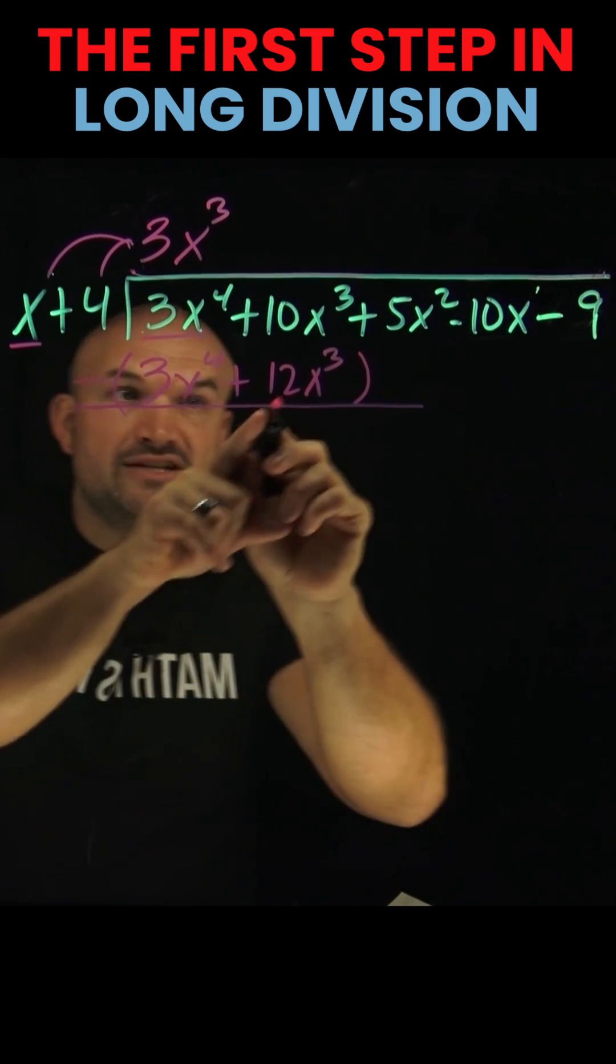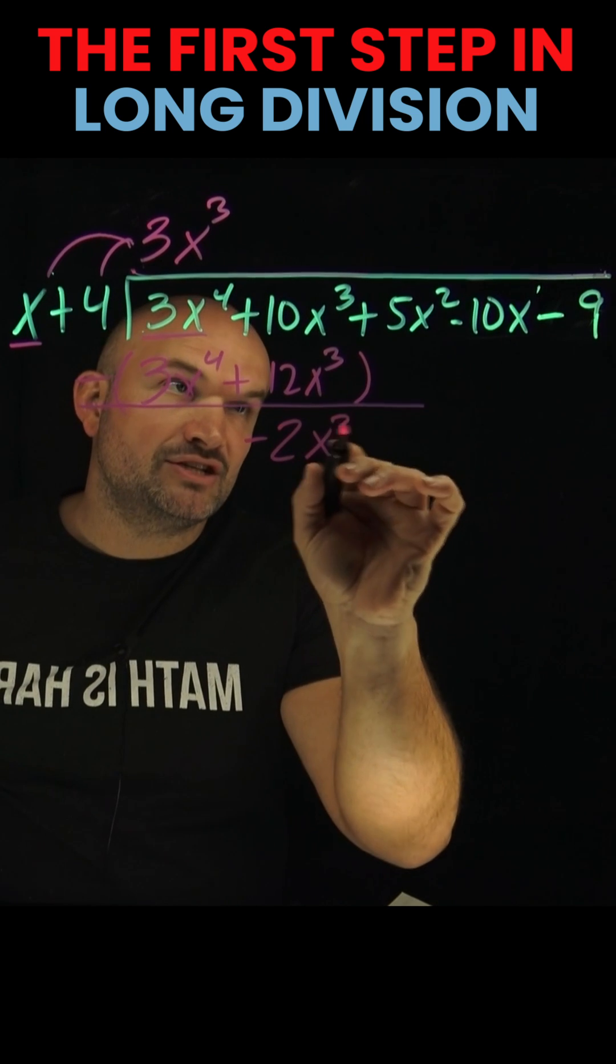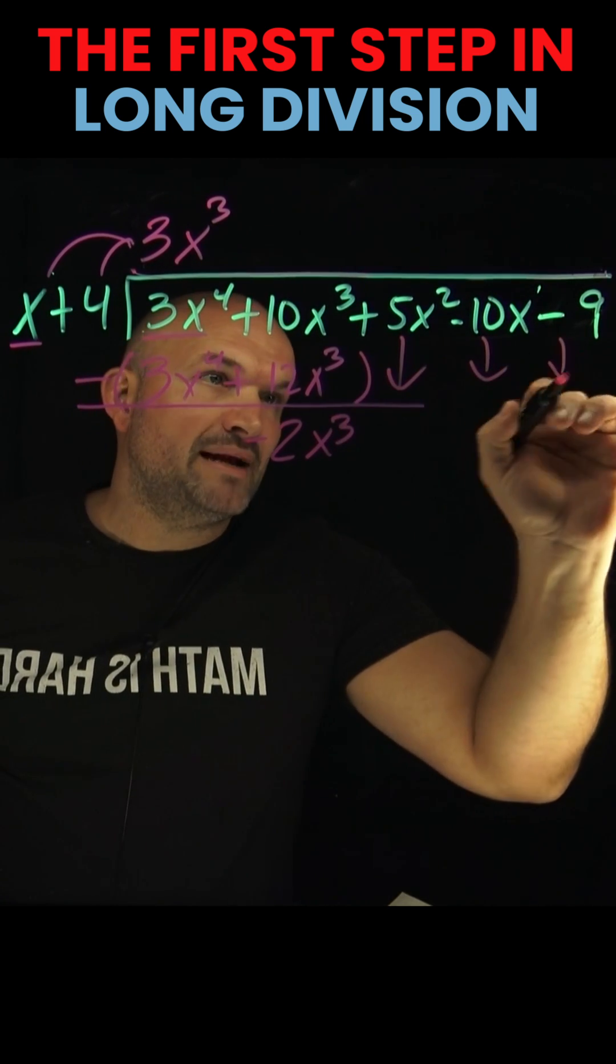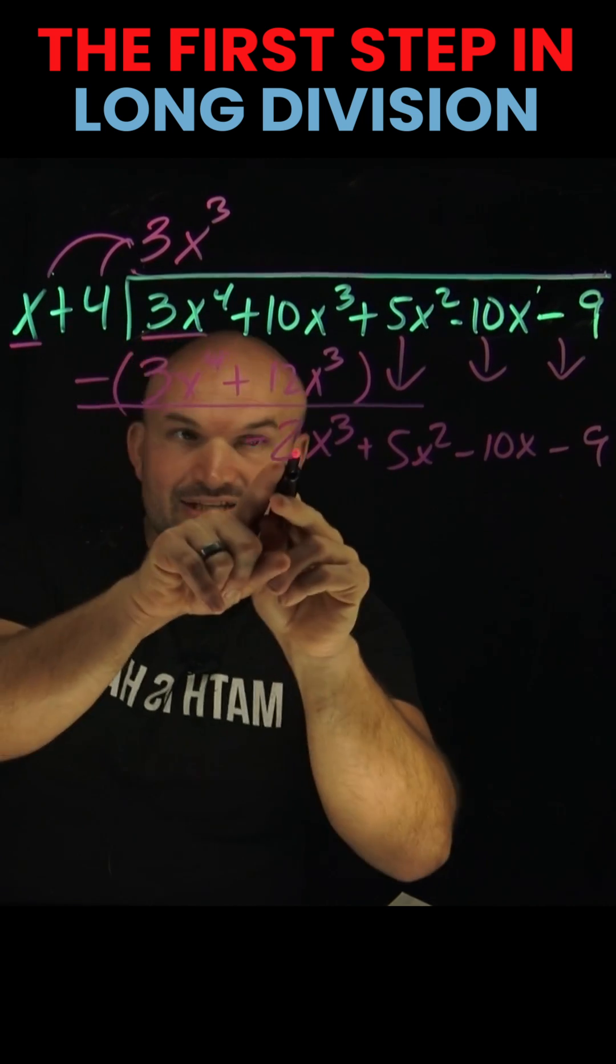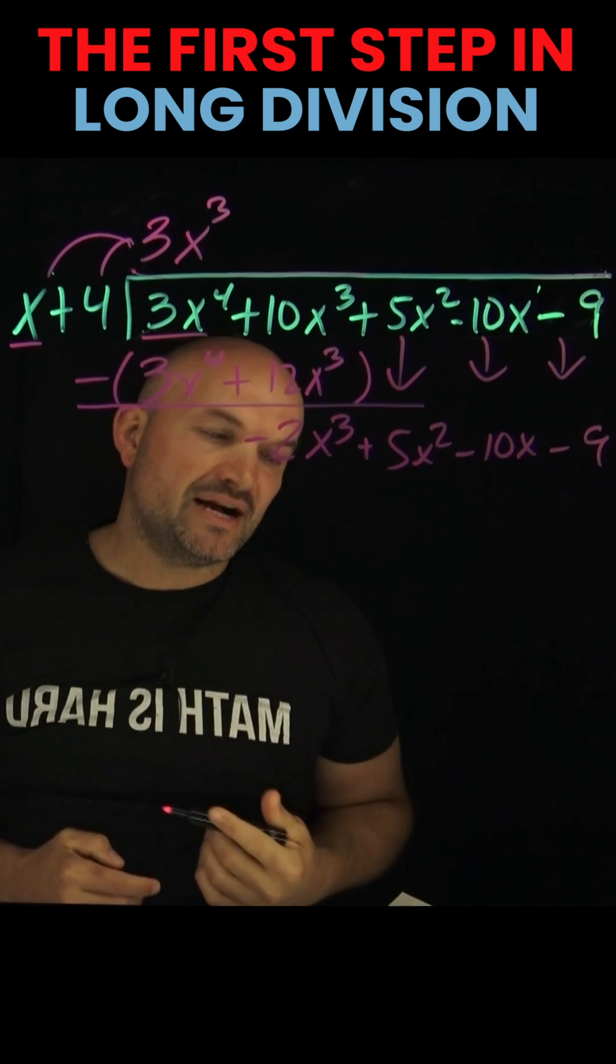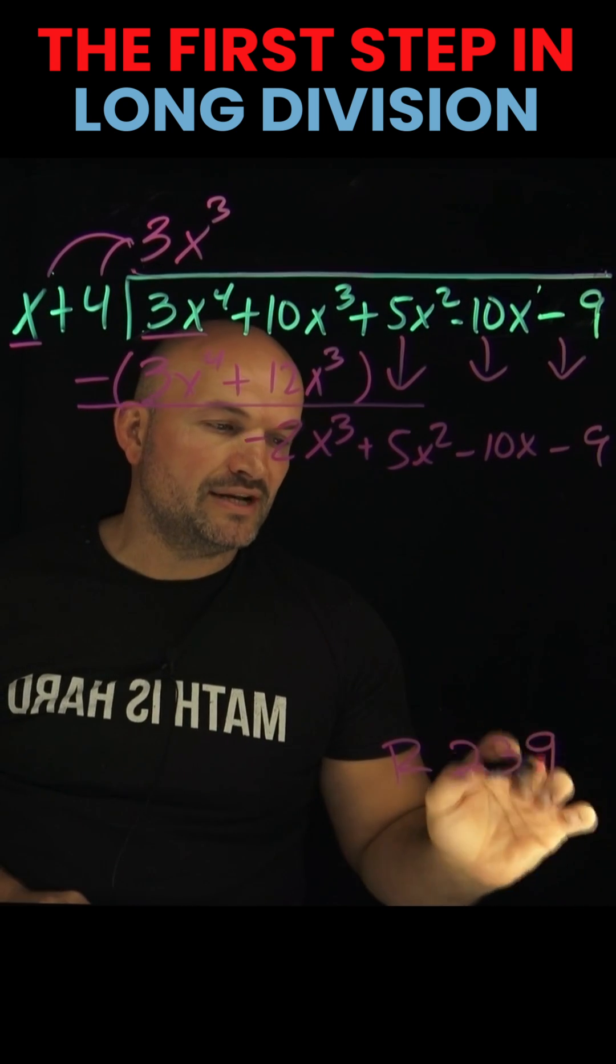10x cubed minus 12x cubed is negative 2x cubed. Then bring down the remaining terms. Now take x into this leading term here. Continue the process and see if you can get a remainder of 239.